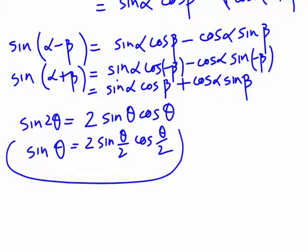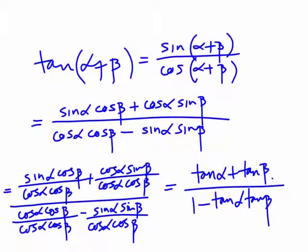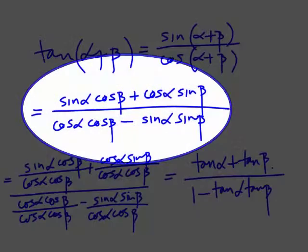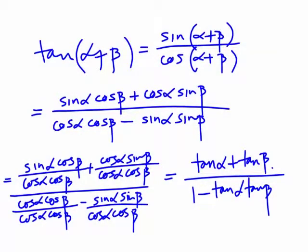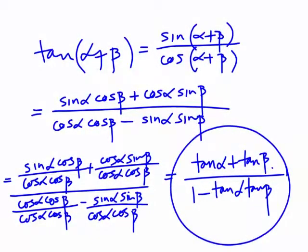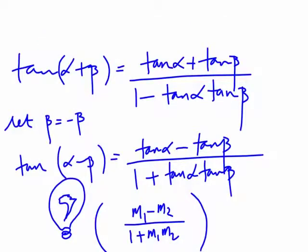For tan(α + β), we write it as sin(α + β) over cos(α + β), expand both, then divide the numerator and denominator by cos α cos β. This simplifies to: tan(α + β) = (tan α + tan β) / (1 − tan α tan β).